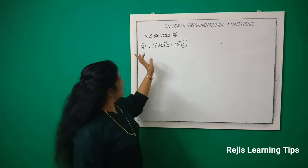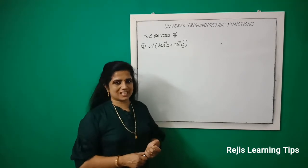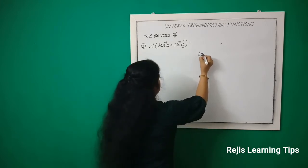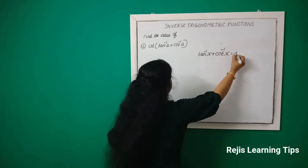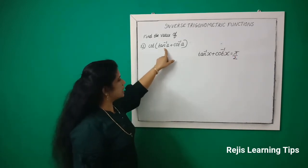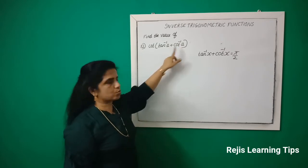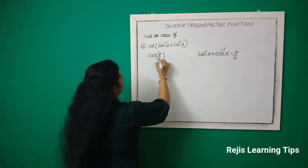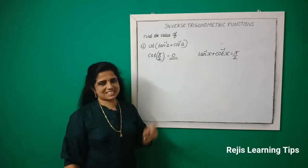12th question: Find the value of cot of (tan inverse A + cot inverse A). Simple question. Tan inverse A + cot inverse A is equal to π/2. So we can write here cot(π/2), and cot(π/2) is equal to 0. Understood?